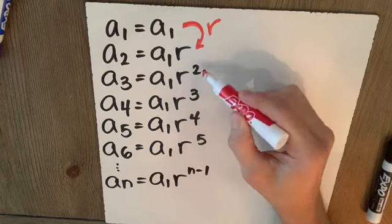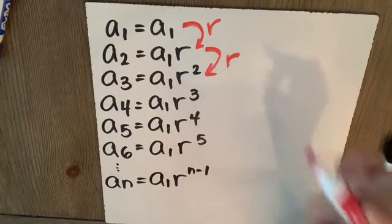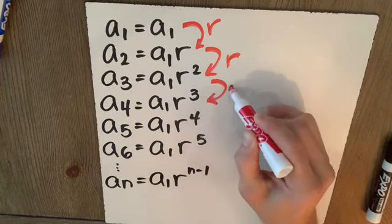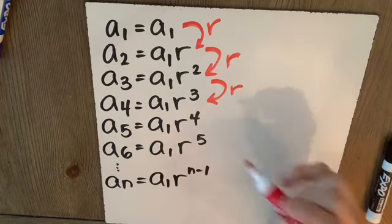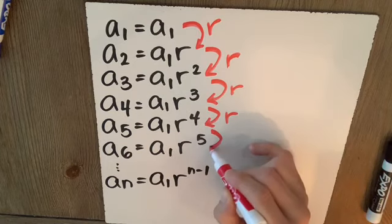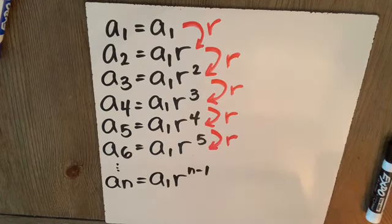Now we have a2. How do we get to a3? We multiply by the common ratio. Now we have a3. How do we get to a4? We multiply by the common ratio. To get to a5, we multiply again by the common ratio. To get to a6, we multiply again by the common ratio.